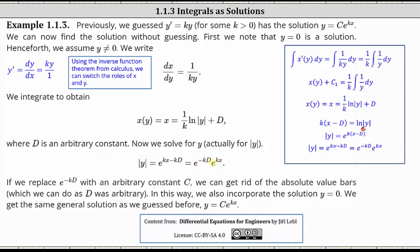Recall that k and d are both constants, and therefore we can replace e to the power of negative kd with an arbitrary constant, which we'll call c. We can also remove the absolute value around y. In this way, we also incorporate the solution y equals zero, and we get the same general solution that we guessed earlier: y equals c times e to the power of kx. This is the general solution to the original differential equation, y prime equals k times y for some constant k greater than zero.